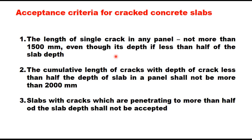The acceptance criteria for cracked concrete slabs in RCCP: the length of a single crack in any panel should not be more than 1500 mm, even if its depth is less than half the slab depth. The cumulative length of cracks with depth less than half the slab depth in a panel should not be more than 2000 mm. Slabs with cracks penetrating to more than half the slab depth shall not be accepted. These are the quality control criteria during construction of roller compacted concrete.